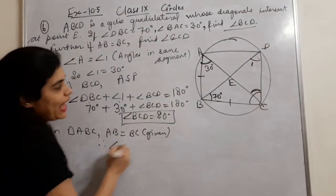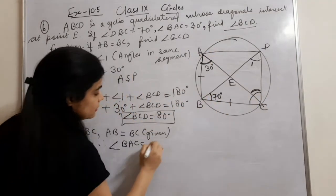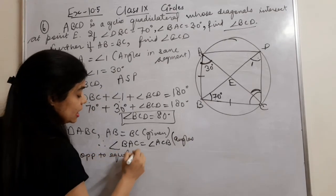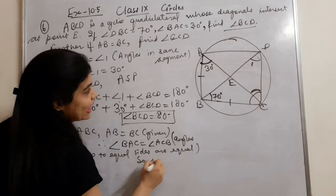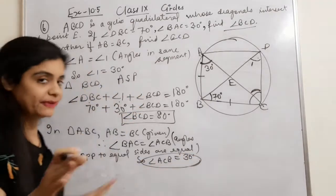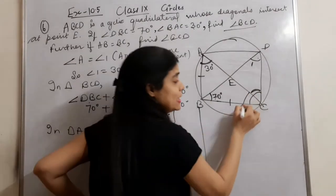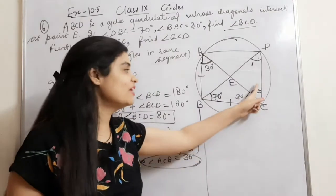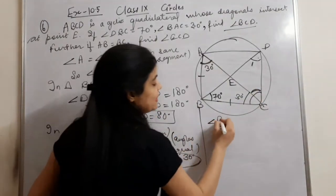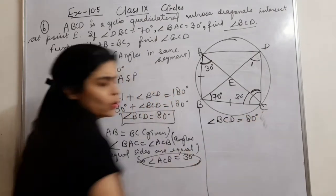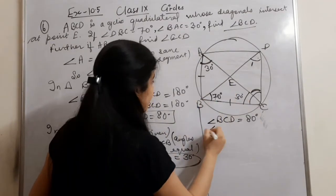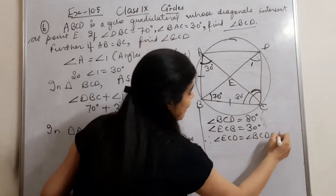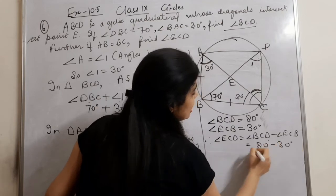In triangle ABC, AB equals BC is given, therefore angle BAC equals angle ACB equals 30 degrees. We have already found that angle BCD is 80 degrees, and angle ECB is 30 degrees. So angle ECD equals angle BCD minus angle ECB, which is 80 minus 30, giving 50 degrees.